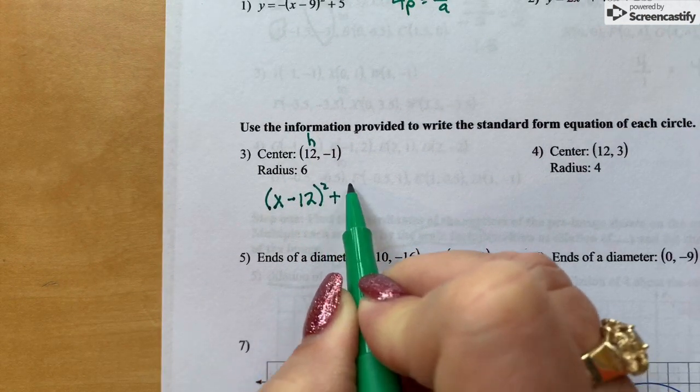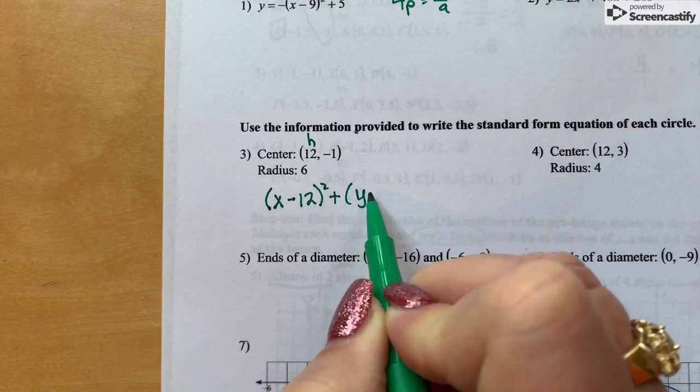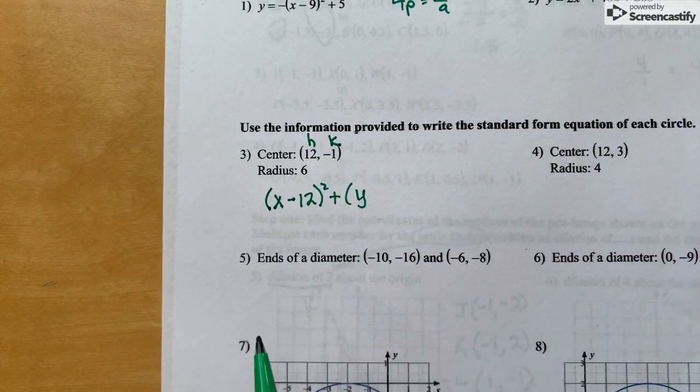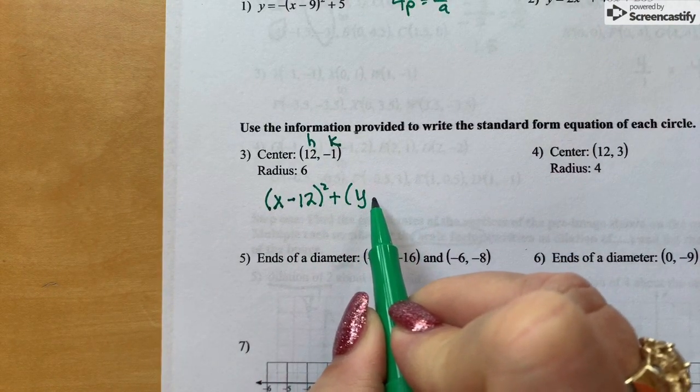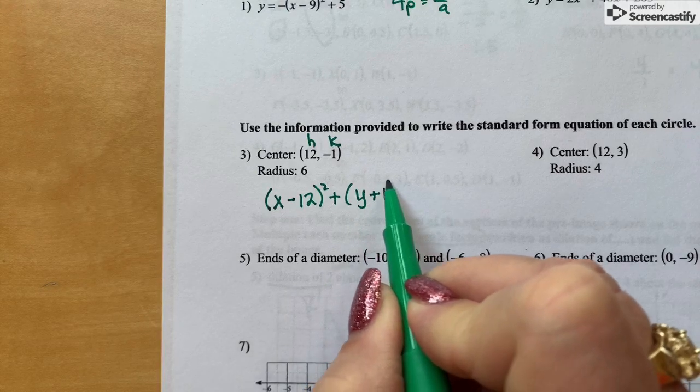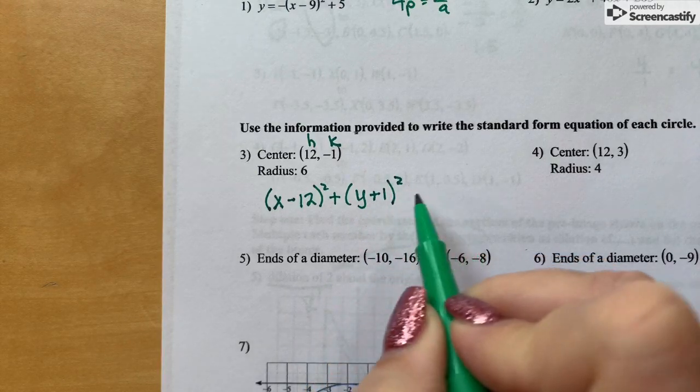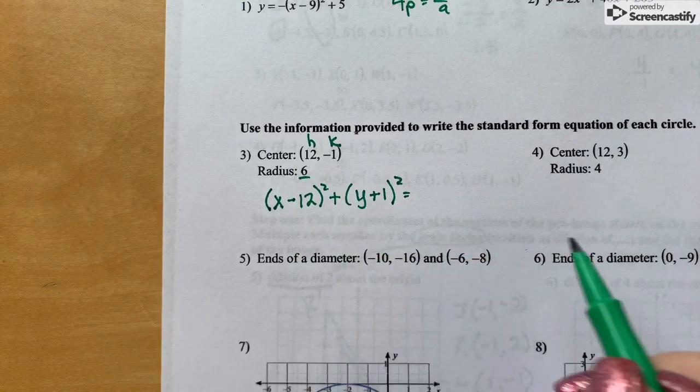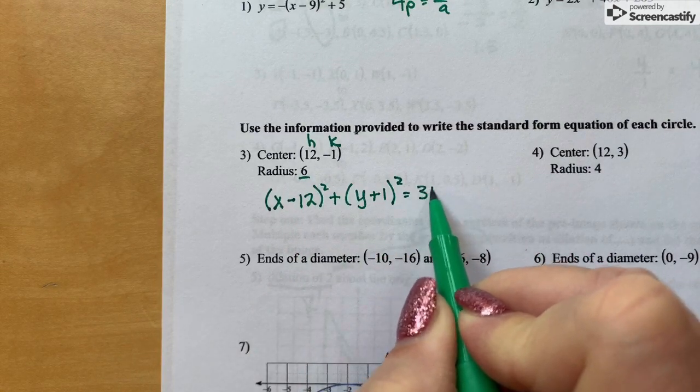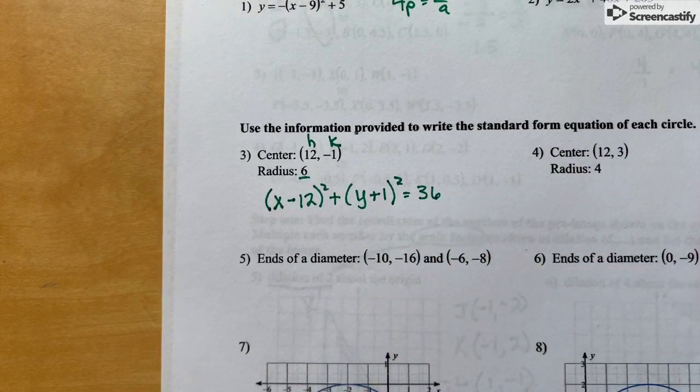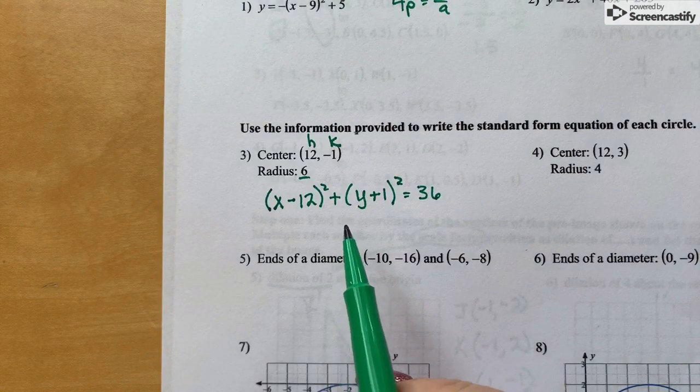I'm going to add it to Y minus the K, because K is negative. Minus a negative one looks like plus one. And then square that. And then my radius is six. So six squared is 36.